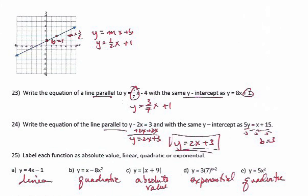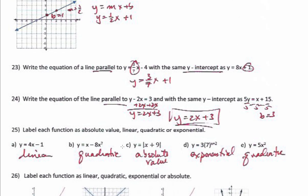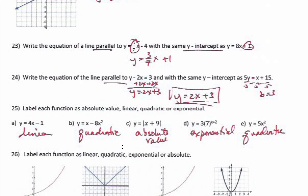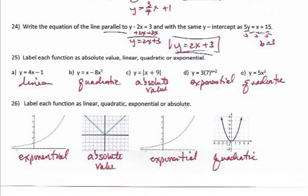For a line parallel to another — parallel means equal slopes. So this line has slope three-sevenths and the same y-intercept, giving y equals three-sevenths x plus 1. For a line parallel to y minus 2x equals 3 with the same y-intercept as 5y equals x plus 15: adding 2x gives slope of 2. Dividing the other equation by 5 gives y-intercept of 3. The answer is y equals 2x plus 3.